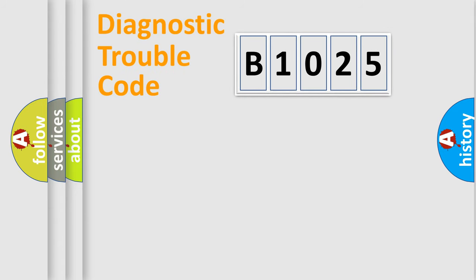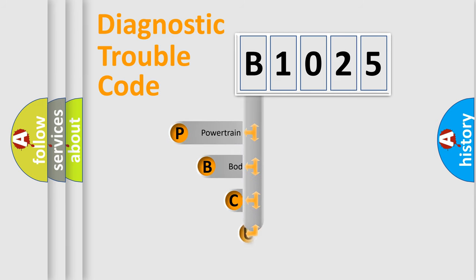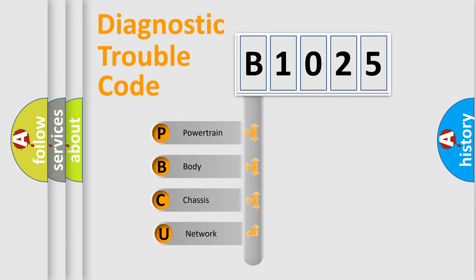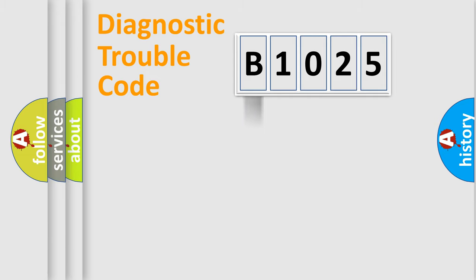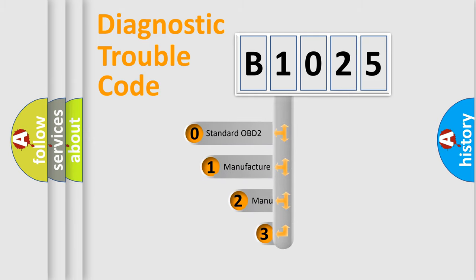Let's do this. First, let's look at the history of diagnostic fault code composition according to the OBD2 protocol, which is unified for all automakers since 2000. We divide the electric system of an automobile into four basic units: Powertrain, Body, Chassis, and Network. This distribution is defined in the first character of the code.